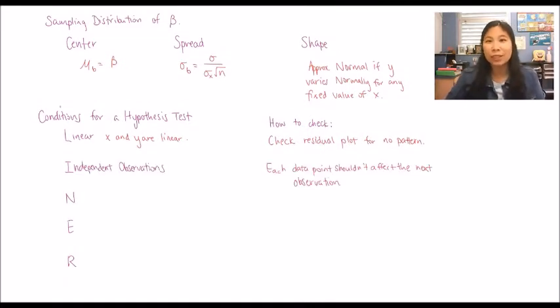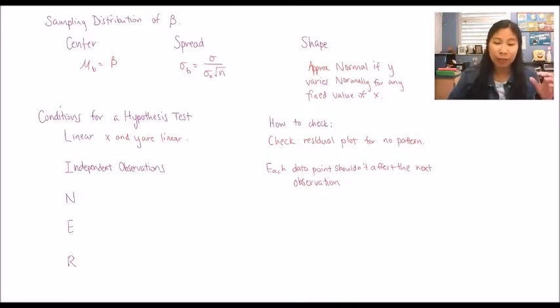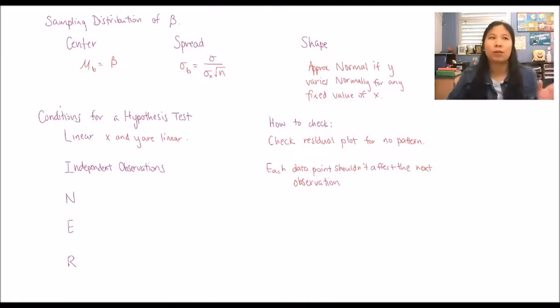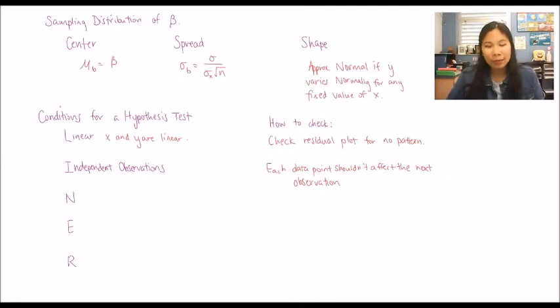The I stands for independent observations. For each data point — the x-comma-y pair — it shouldn't affect what the next data point is, because they're independent of each other.